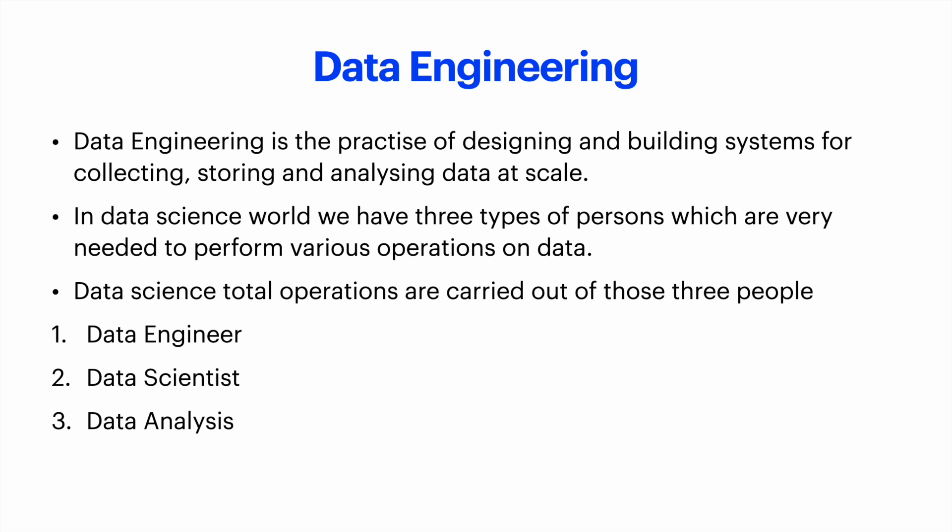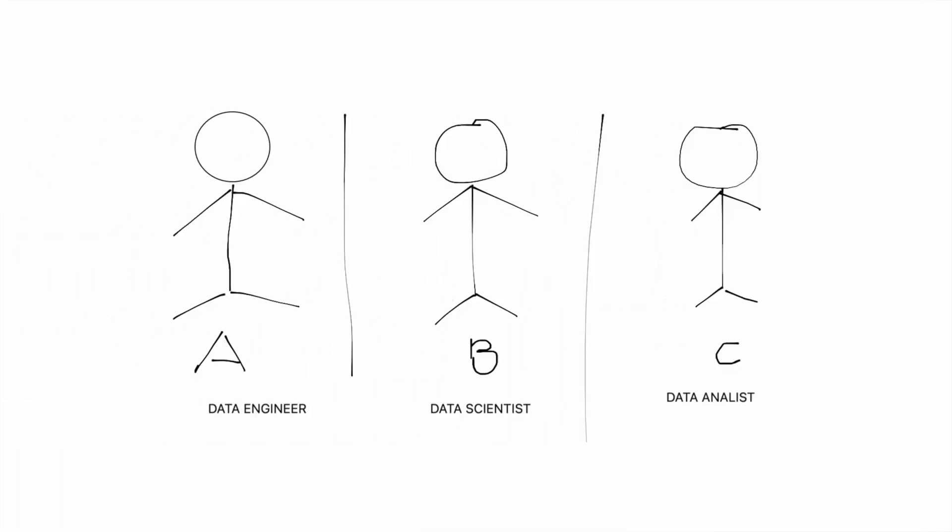There are three types of persons in data science. The first person is a data engineer. The second person is a data scientist. The third person is a data analyst.